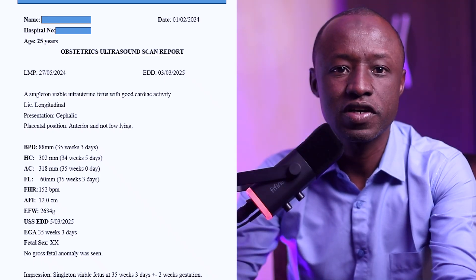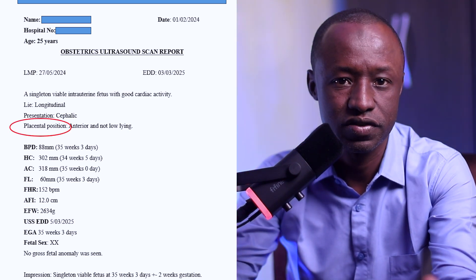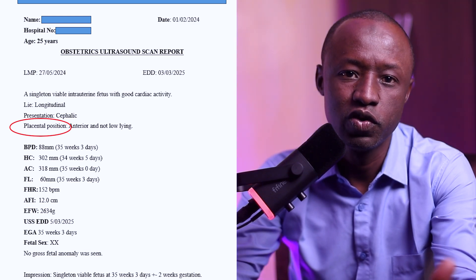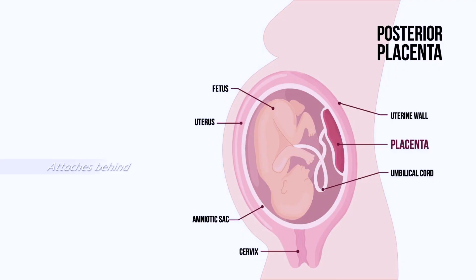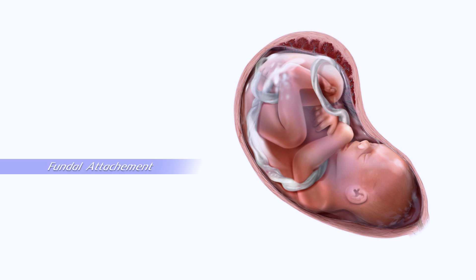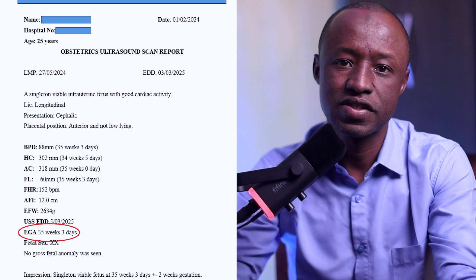Another thing we can see on the ultrasound scan is placental position, which shows where the placenta is attached. In this report, it is anterior, meaning the placenta is attached to the front wall of the uterus, which is totally normal. Another normal site of placental attachment is posterior, when the placenta attaches to the back wall of the uterus. In some cases, the placenta can attach to the upper pole of the uterus, which is called fundal attachment. Low-lying placenta is when it occupies the lower uterine segment, and that's not normal.